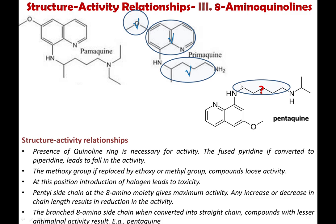For the SAR of 8-aminoquinolines: the presence of the quinoline ring is necessary — if the quinoline ring is converted into a pyridine (i.e., hydrogenated and saturated), it leads to a fall in activity. If the methoxy group is replaced by ethoxy or methyl, compounds lose activity — so methoxy is required. Introduction of a halogen at this position may lead to toxicity. The pentyl side chain at the end gives maximum activity, and any decrease or reduction in the side chain causes a reduction in activity. The branched 8-amino side chain, when converted into a straight chain as in pentaquine, also shows lesser anti-malarial activity.